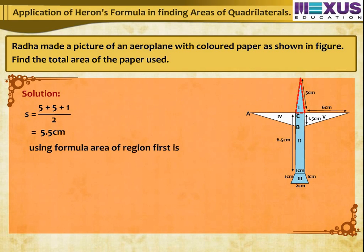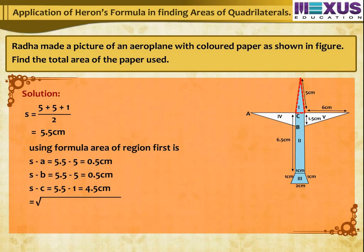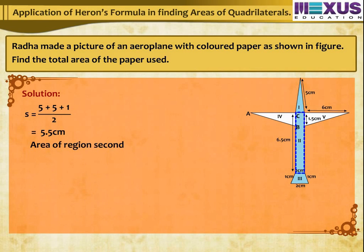Using Heron's formula, area of region 1 = √(5.5 × 0.5 × 0.5 × 4.5) = √6.1875 ≈ 2.49 cm². Area of region 2 is a rectangle: base × height = 1 × 6.5 = 6.5 cm².